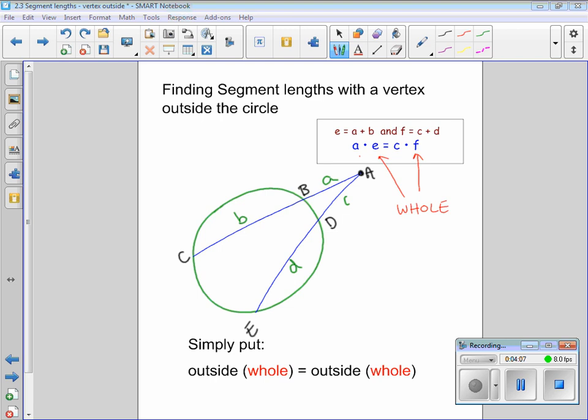Simply put, the relationship that we have at the top, a times e equals c times f, is the idea of the outside piece times the whole thing equals the outside piece times the whole thing. We have two segments that we're dealing with that meet and create a vertex outside the circle. This outside times the whole thing equals outside times the whole thing is the relationship that we're always going to apply to these kind of problems. To help you understand this we're going to do some example problems.